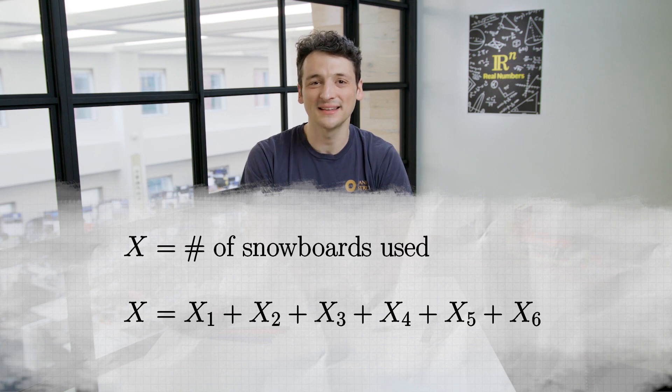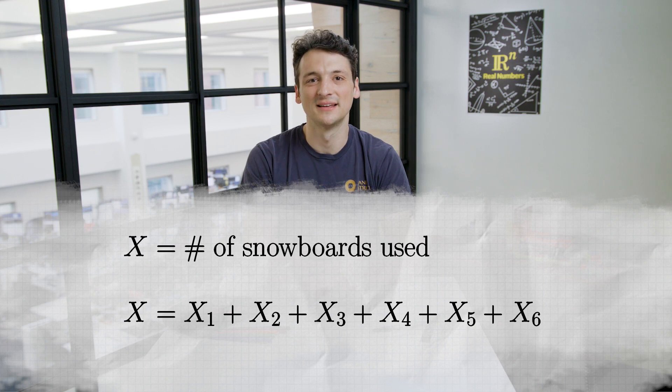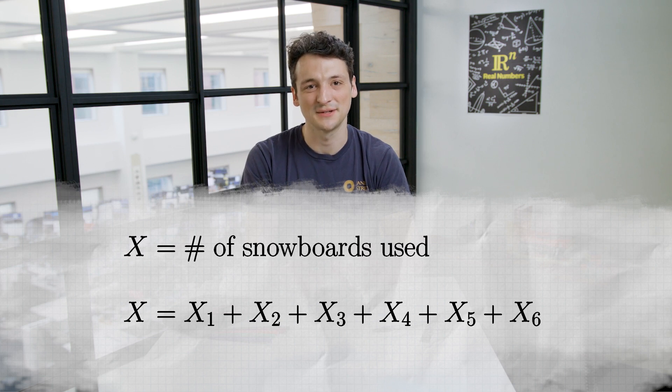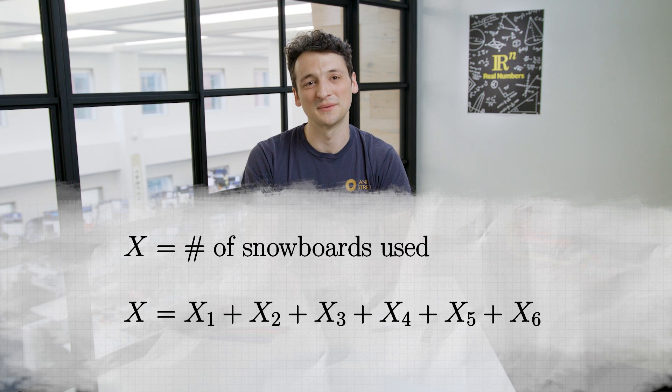Why is this? Well, let's say Rachel only used her second and fourth snowboards in a week. This means x sub 2 and x sub 4 are 1, and the other x sub i are 0. So the sum on the right is 2, the total number of snowboards used. The indicator variables are essentially counting up the number of used snowboards.